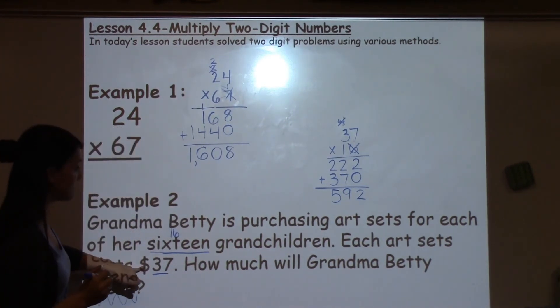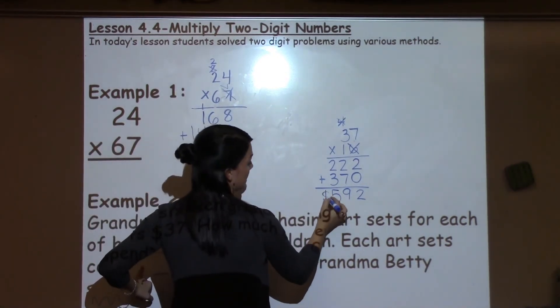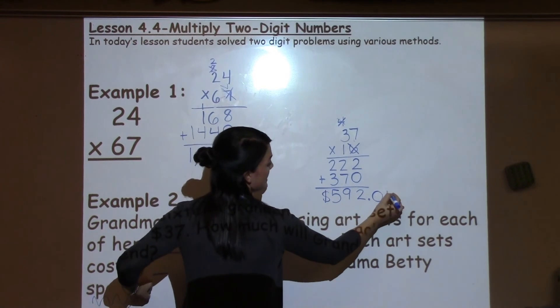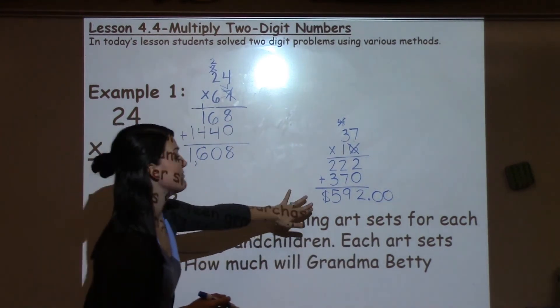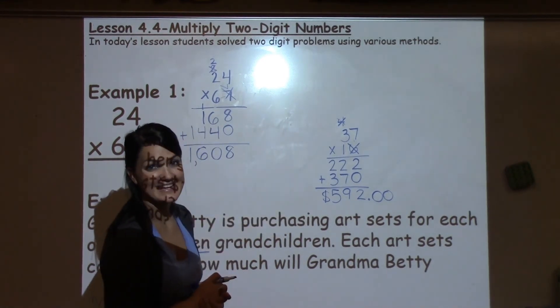So, because I'm working with money here, your student could add a dollar sign. They could also add that she doesn't have any cents that she's working with since we were working with whole dollars. Alright, for a final answer of $592.